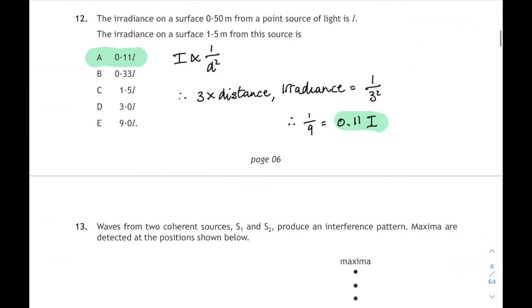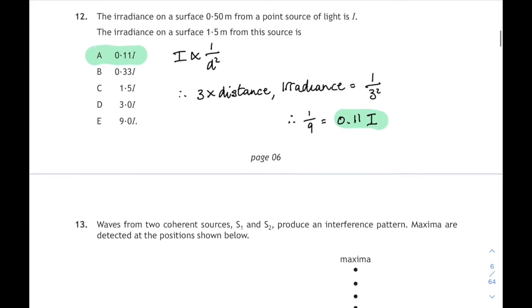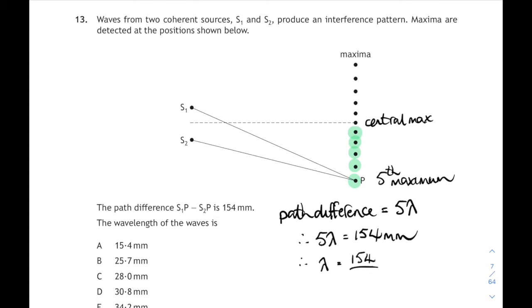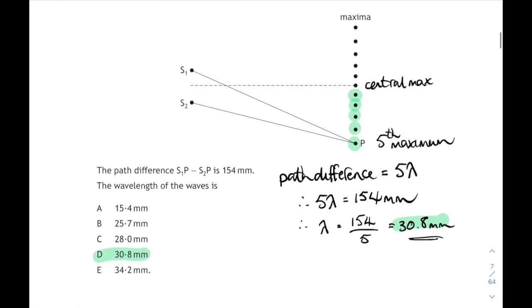Question 13 is on interference of light waves. Waves from two coherent sources s1 and s2 produce an interference pattern and maxima are detected at the following positions. We've always got a central maximum and then count out the way to the point that we're interested in. One, two, three, four - we're at the fifth maximum, the fifth maximum out from the middle. That means the path difference to that fifth maximum is going to be five wavelengths. Five complete wavelengths is going to be equal to 154 millimeters we're told, so 154 divided by 5 is 30.8 millimeters. That's answer D.